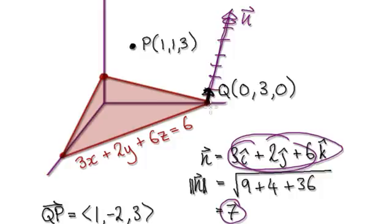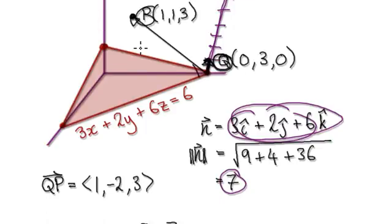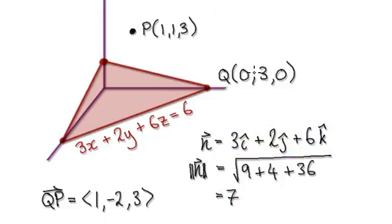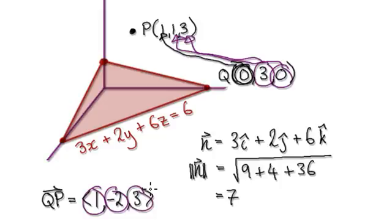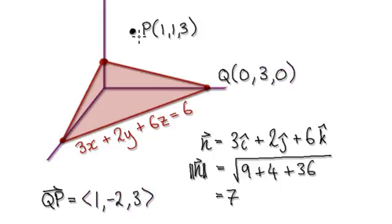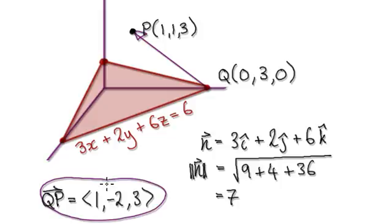So now we need to work out the vector QP. How would we get from Q to P? Well, if you're currently at Q, how would you get to P? Currently you're at 0, so you need to move 1 in the positive direction. Currently you're at 3 — how would you get to 1? Well, you need to go 2 in the negative direction. Currently you're at 0, how would you get to 3? Well, you would need to move 3 in the positive direction. So the vector QP is given by this.